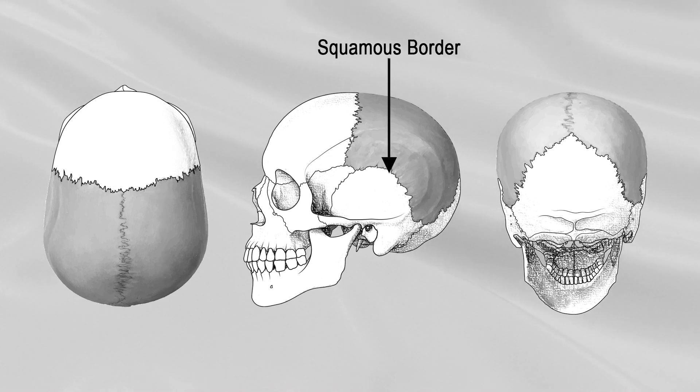The squamous border is divided into three parts. The anterior portion articulates with the tip of the greater wing of the sphenoid. The middle portion articulates with the squamous temporal, and the posterior portion articulates with the mastoid portion of the temporal.